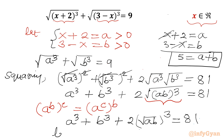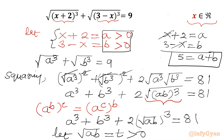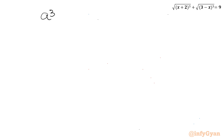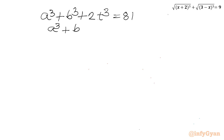Now let's consider the substitution √(ab) = t. Since a and b are both positive, t must always be greater than 0. So our equation becomes: a³ + b³ + 2t³ = 81, or equivalently: a³ + b³ = 81 − 2t³.